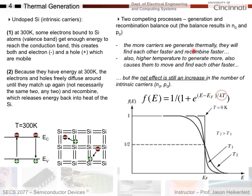The net effect is still a general increase in the number of intrinsic carriers. Even though you increase the thermal generation rate and the recombination rate also increases, the total concentration is greater than at lower temperature. We see this with the Fermi distribution: at 0K you get the expected step function, and as you go to higher temperatures the Fermi distribution spreads out more, increasing carrier populations as it overlaps with the density of states.